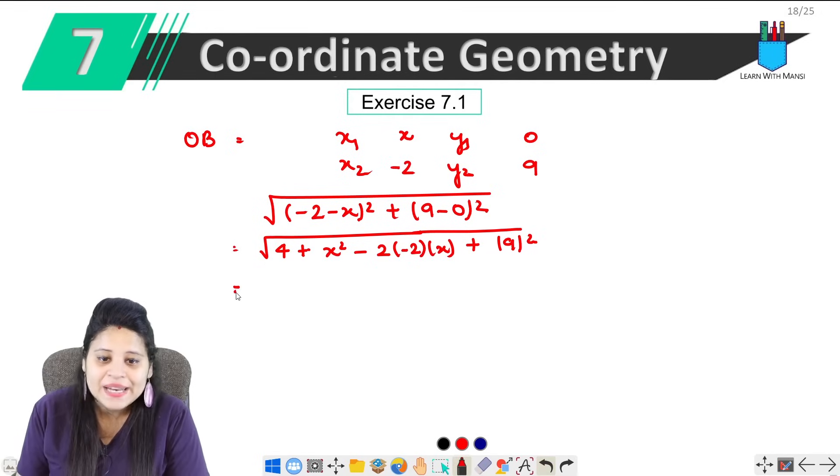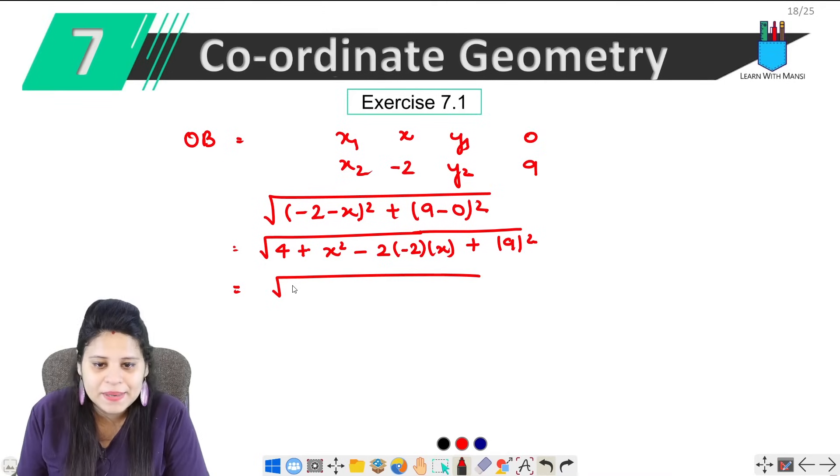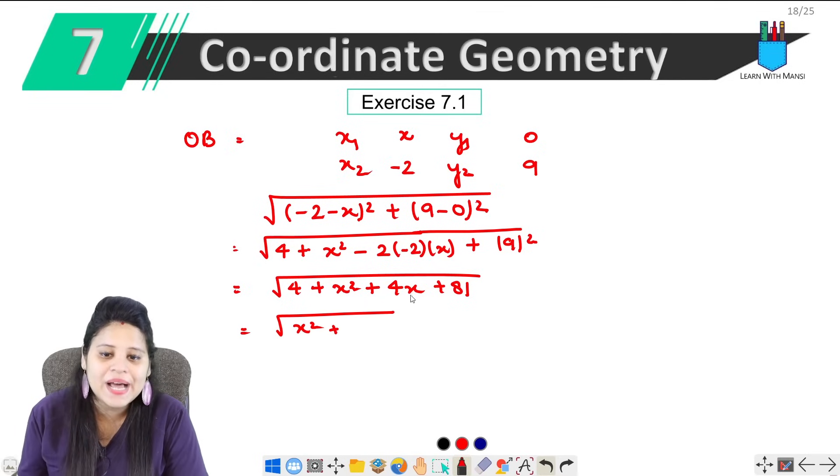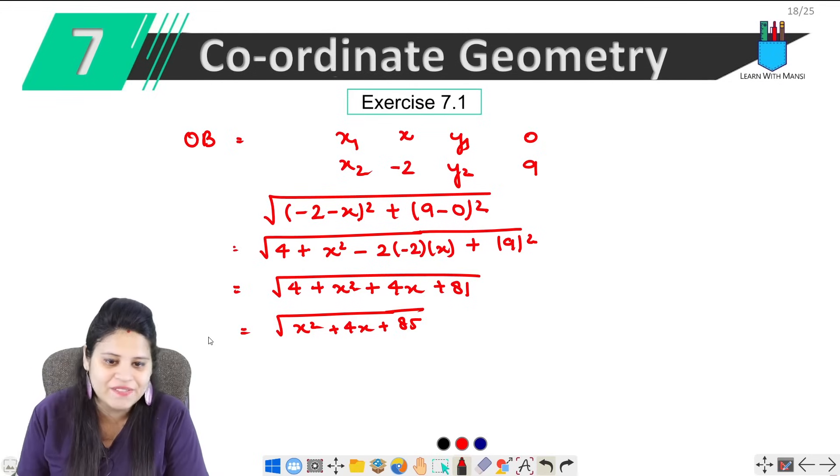Under root, now from here we will get 4 + x² minus minus plus, so 4x, and plus 81. So this equals under root (x² + 4x + 85). So this is OB.